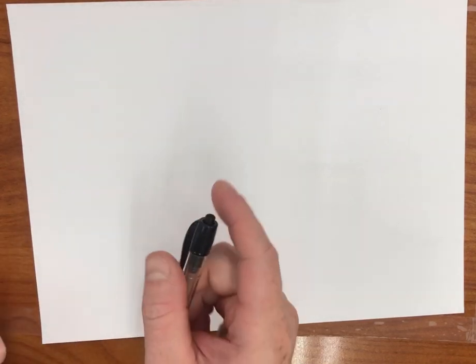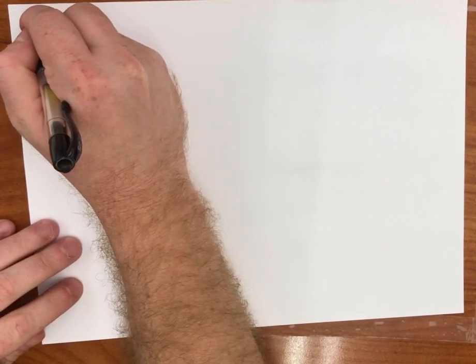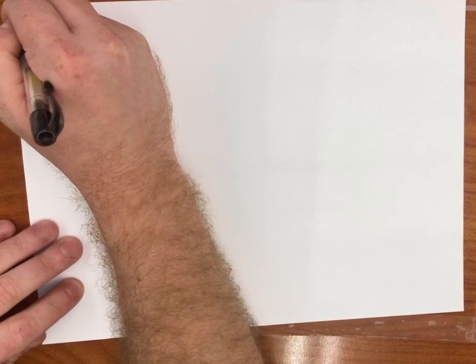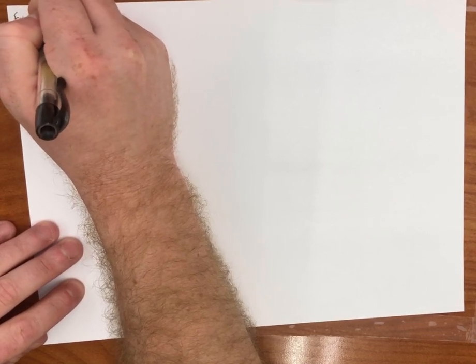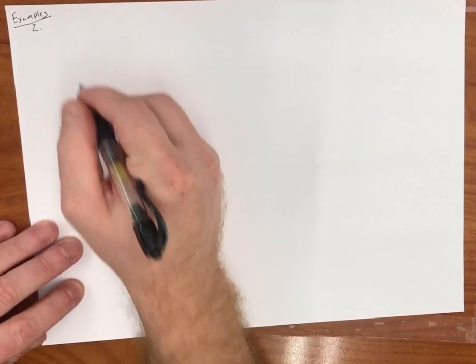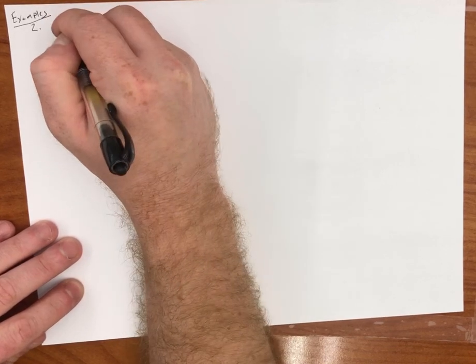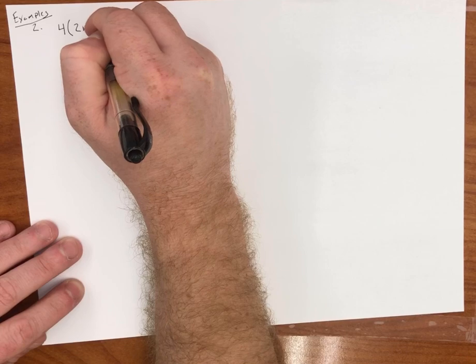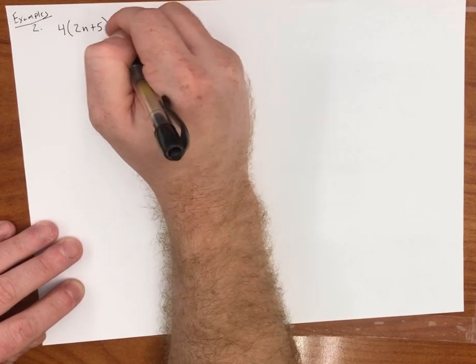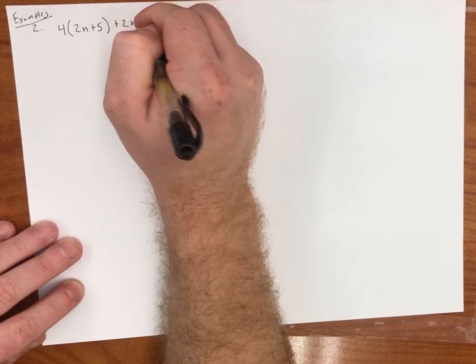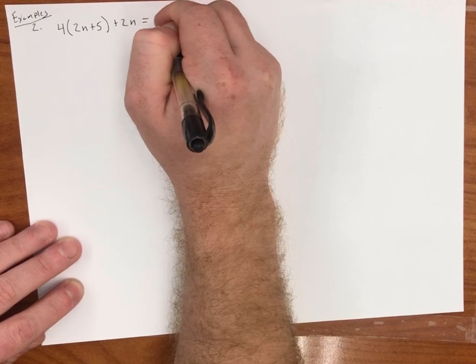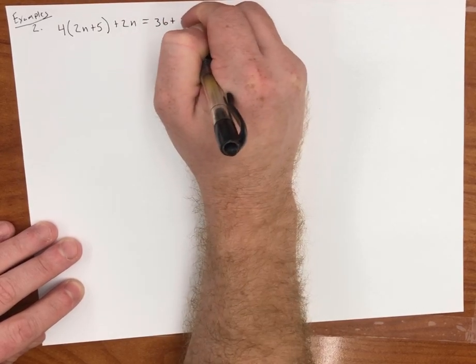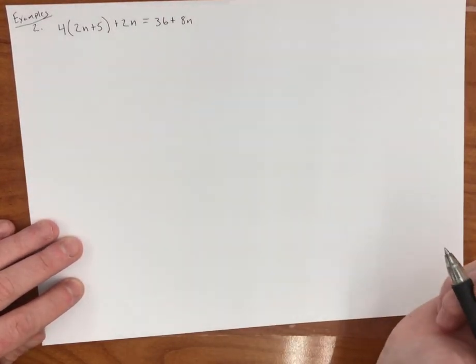Now, let's go ahead and go to another example. Again, I'm going to write this example down. So again, we're still on examples. Example number 2. I would like for you to now try to do this on your own. Pause the video. Try it on your own. And then let's get back together and try this together.